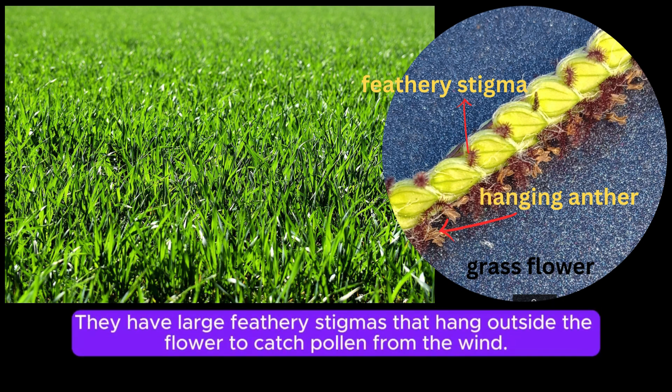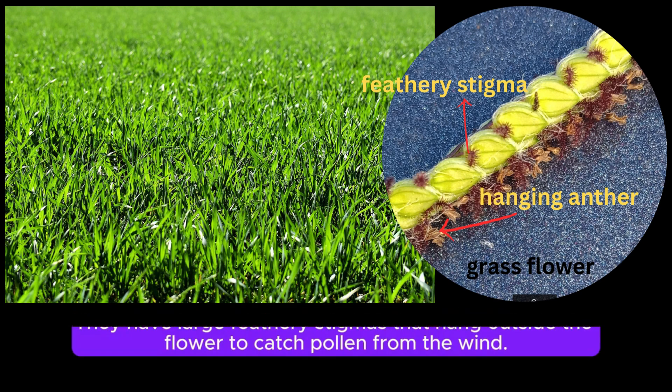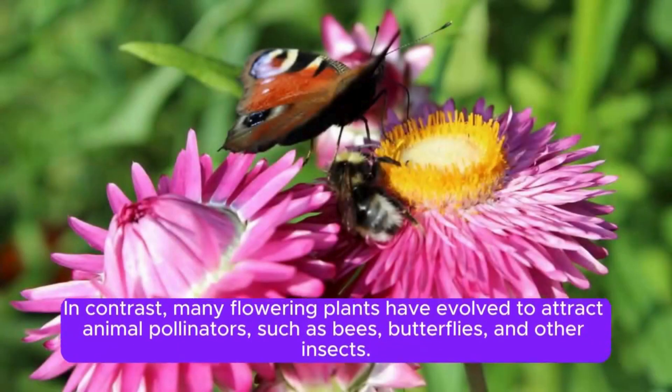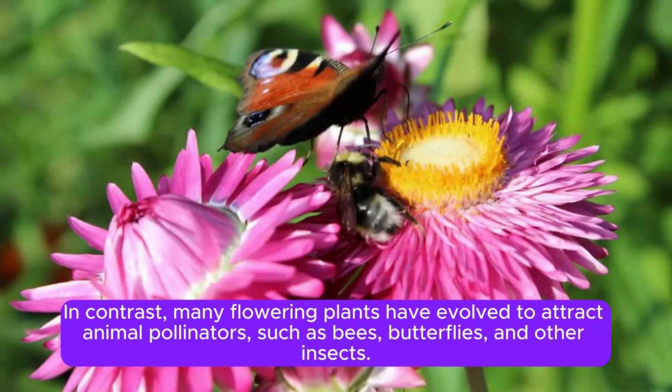Anthers of wind-pollinated flowers are loosely attached and dangle out to release pollen into the wind. They have large feathery stigmas that hang outside the flower to catch pollen from the wind. Pollination can happen whenever there is wind to carry them, and they do not have to wait for insects. In contrast, many flowering plants have evolved to attract animal pollinators such as bees, butterflies, and other insects.